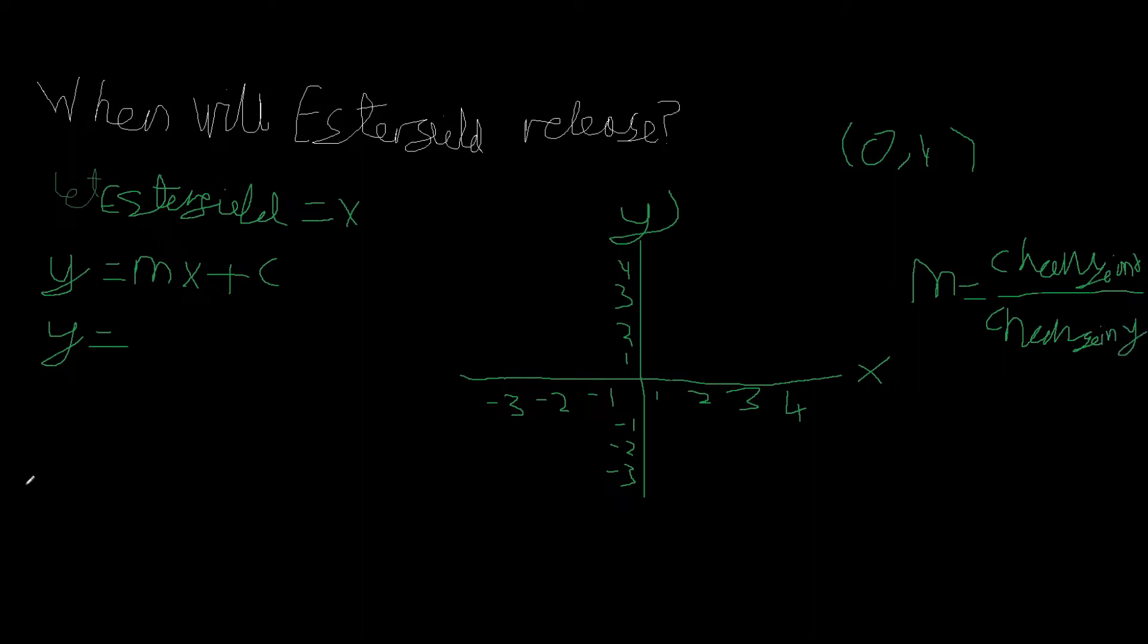Or it could be abbreviated to m equals y1 negative y2 over x1 negative x2. Okay, so let's say we had a line going like this.